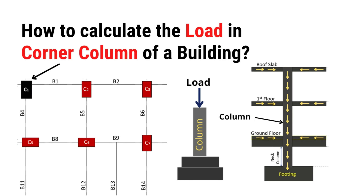We have a building plan containing 12 columns numbered from column 1 to column 12. The given data: number of stories is 2, floor height is 3 meters, size of primary beam is 230 x 300 mm, size of secondary beam is 230 x 230 mm, and size of plinth beam is 230 x 600 mm. Since we have to do the calculation for side column — that's column 11 — the size of column 11 is given as 230 x 400 mm. Wall thickness of both external and internal walls is 230 mm. Soil bearing capacity is 150 kN per meter square. The height of neck column is 1 meter, which is the height of column from footing top up to the ground level.